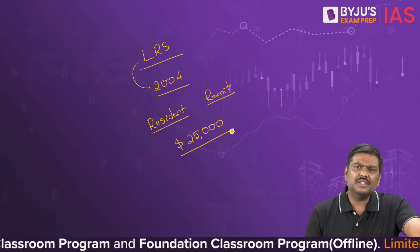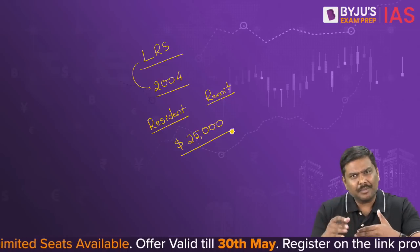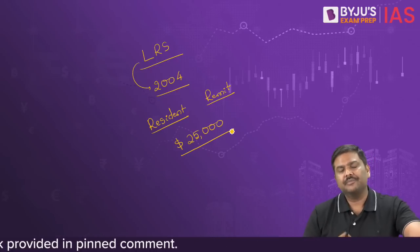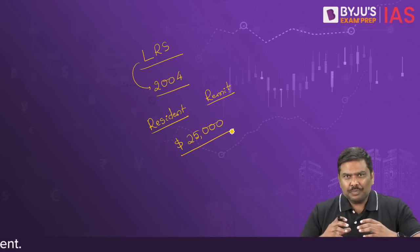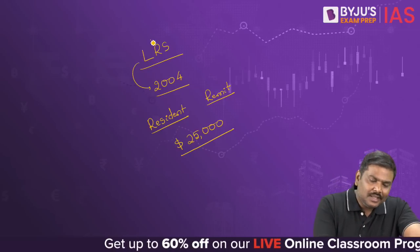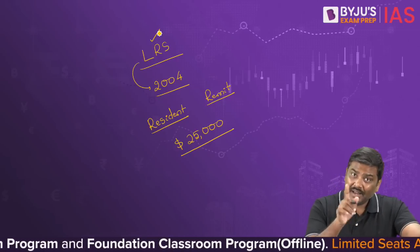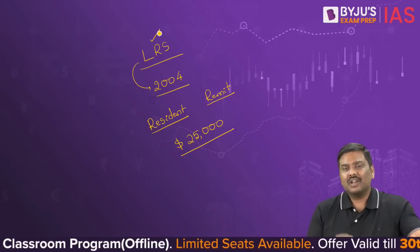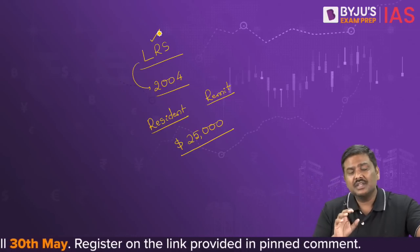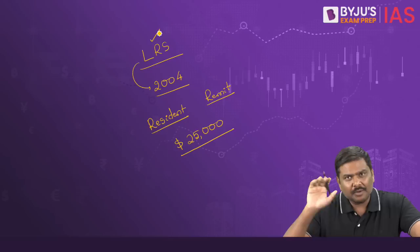Whenever you want to take out dollars from India, you have to approach the Reserve Bank of India because there are guidelines under the concept of FEMA 2000. Now RBI, in order to promote the liberalization of outflow of remittances, introduced the Liberalized Remittance Scheme. Under this, individuals in India were allowed to remit out — simply take out a certain number of dollars without having to take any kind of approval or permission from the Reserve Bank of India.